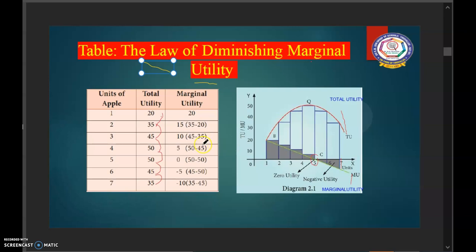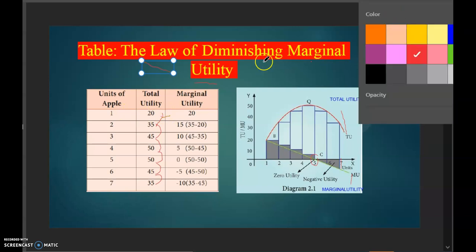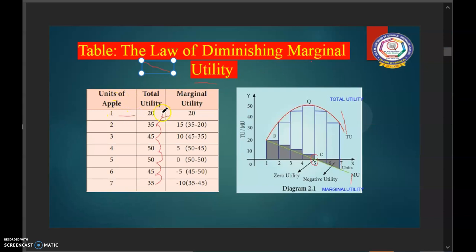Suppose a consumer wants to consume seven apples one after another. So, the utility which he gets from the first apple is 20. So, when he consuming first apple, the utility which he gets is 20 and while taking second apple, his utility was 30.